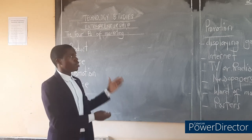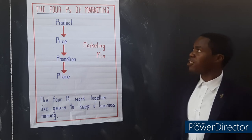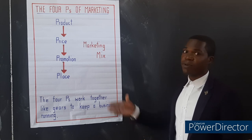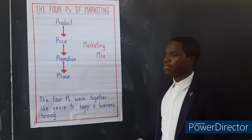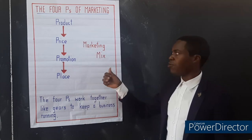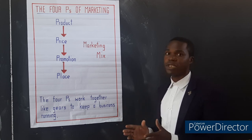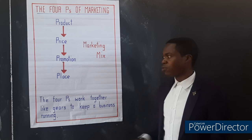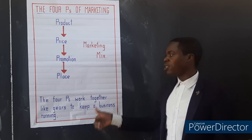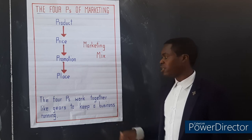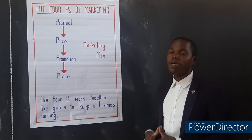Now to sum up our lesson, we have a chart here showing the four P's of marketing: product, price, promotion, and place. These are also called marketing mix or the factors you are supposed to consider in business if you want your business to keep running. The four P's of marketing work together like gears to keep a business running.